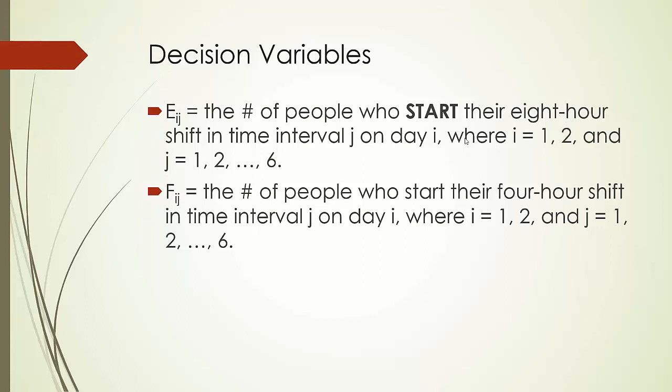Similarly, we are going to define F_ij. F means 4-hour people. i once again is the day, day 1 or day 2. j is the time interval. Therefore, F_ij is the number of people who start their 4-hour shift in time interval j on day i.